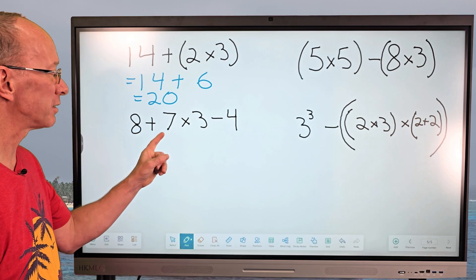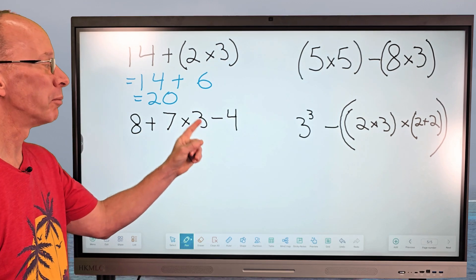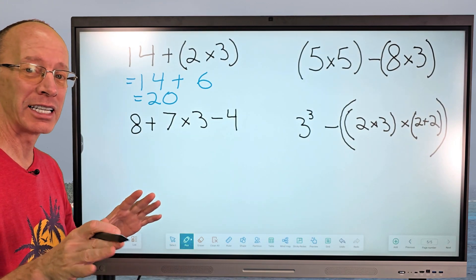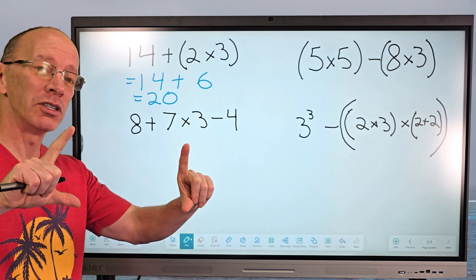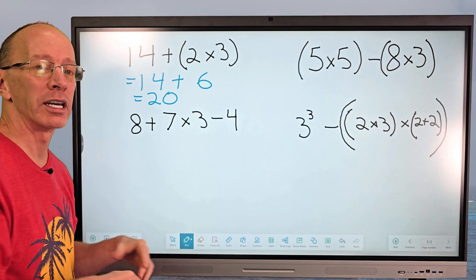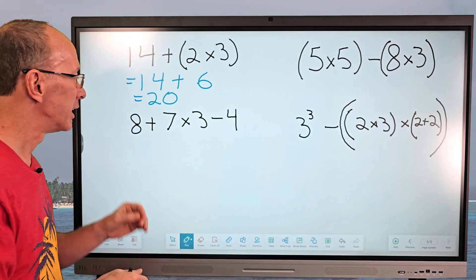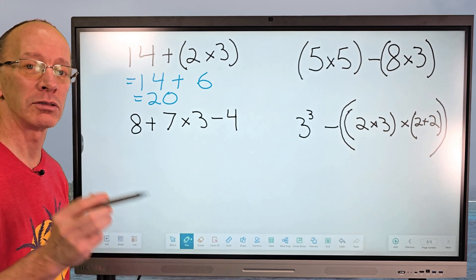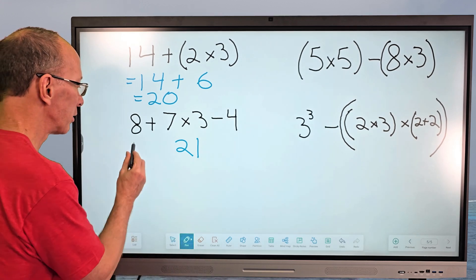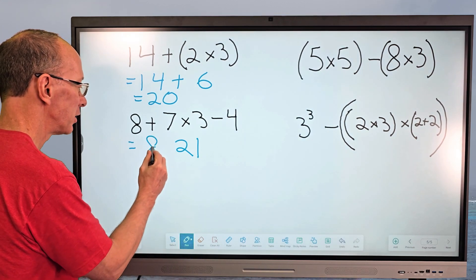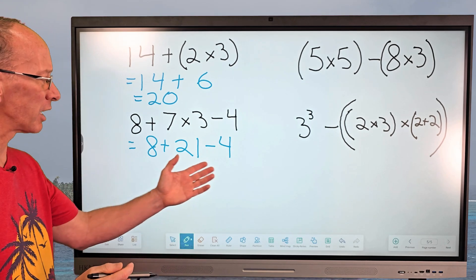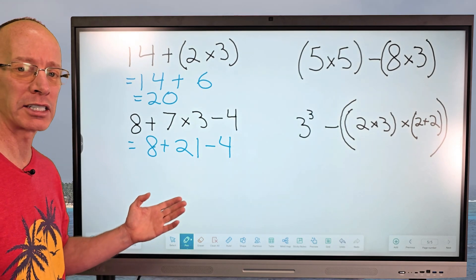Now let's do this one: 8 plus 7 times 3 minus 4. What do we do first? We'd do what's inside parentheses, but there are no parentheses. There are no exponents either. So we go to step three: multiplication and division. 7 times 3 equals 21, so I put 21 right here and rewrite the problem as 8 plus 21 minus 4.